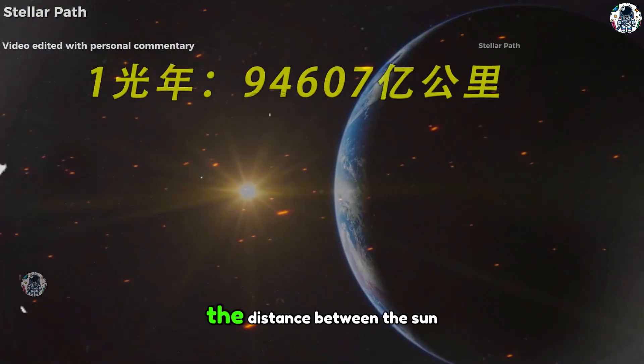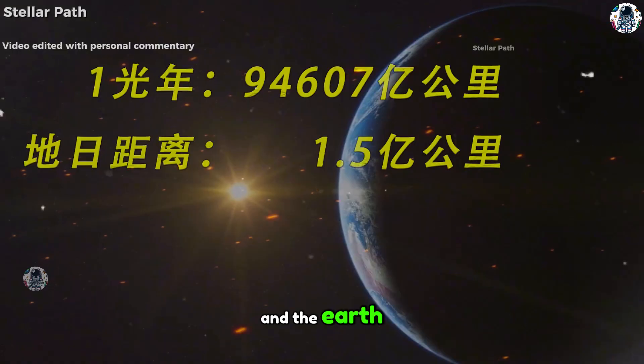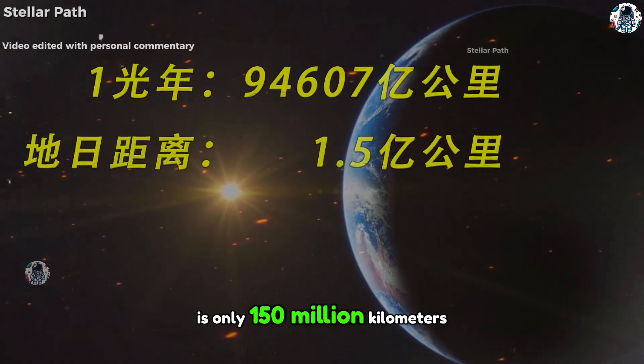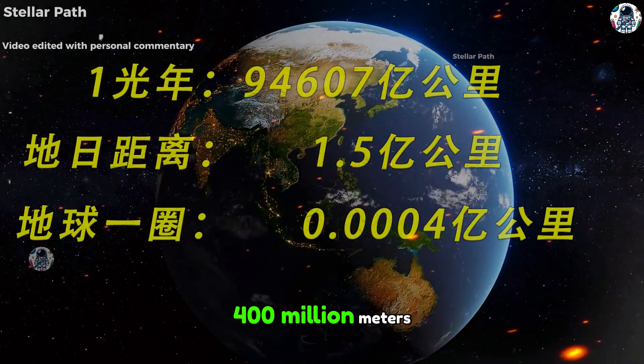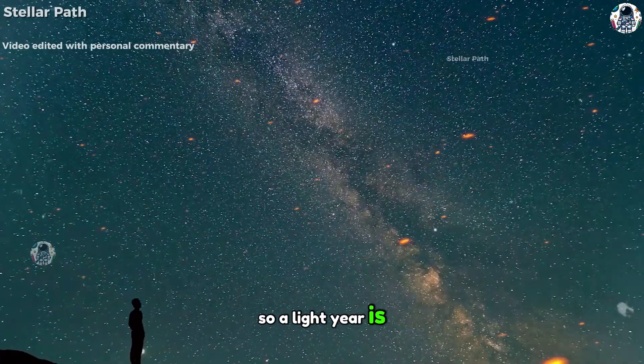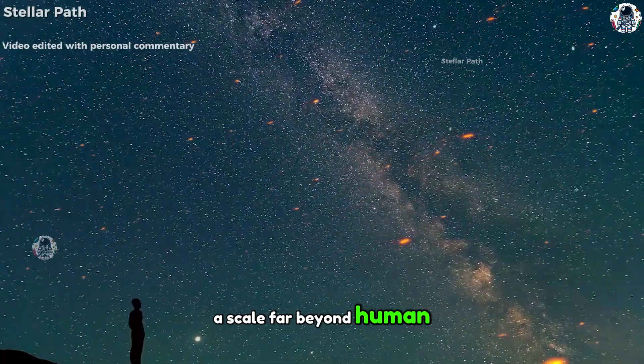By comparison, the distance between the Sun and Earth is only 150 million kilometers, and Earth's circumference is about 400 million meters. So a light year is a scale far beyond human reach.